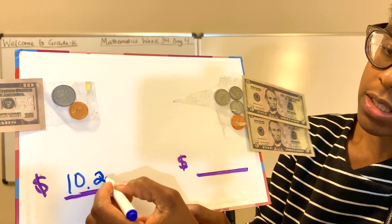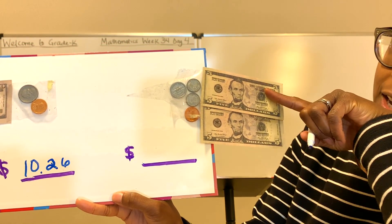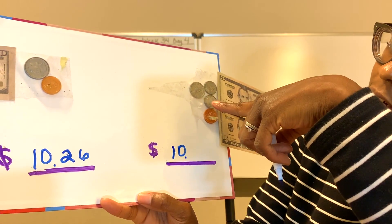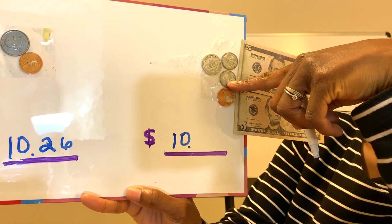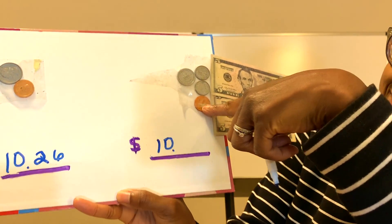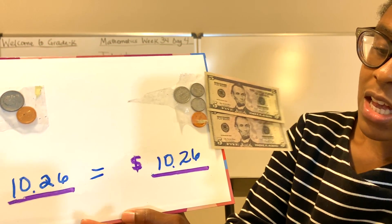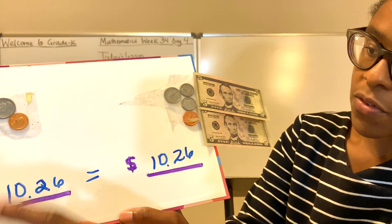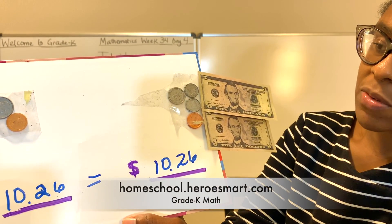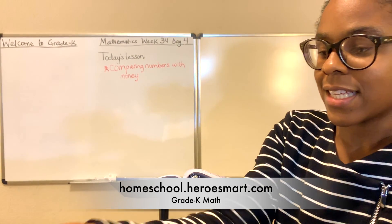Now on this side, we have two $5 bills, and we count by fives: five, ten — that would be $10. Then counting the coins here, we have two dimes, a nickel, and a penny. Here we go: 10, 20, 25, 26 — $10.26. Oh, look at that! The two sides are equal, which means both this side and this side have the same amount of money. There are times where you'll see that different combinations of money can equal the same amount. And that's always nice.